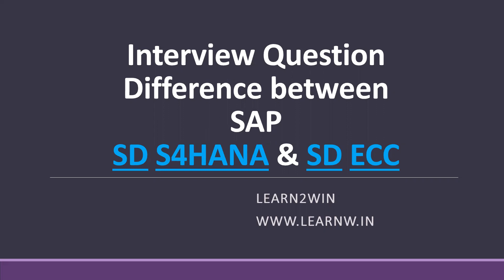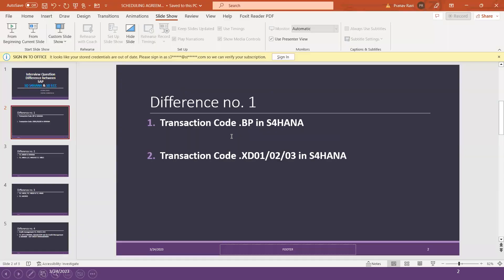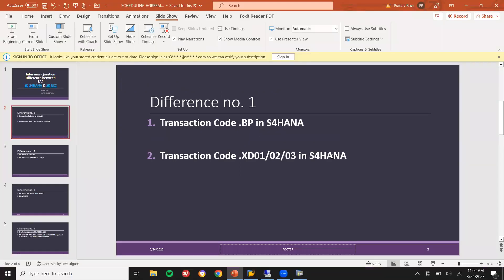The first one we are going to see: if they ask you, you can say all these answers. The first is the BP transaction code. In S4HANA, it is the BP transaction code, and in ECC it is XD01, XD02, XD03.